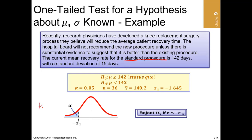The research hypothesis is that the average recovery time must be less than 142 days — that is what researchers want to demonstrate. Therefore the alternative hypothesis is that the mean is less than 142 days. The null hypothesis states the mean is greater than or equal to 142 days, because the status quo or standard is always placed in the null hypothesis.